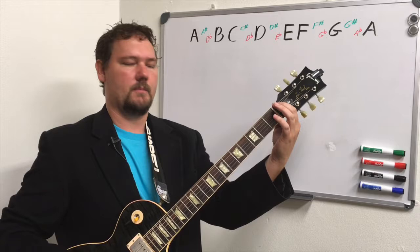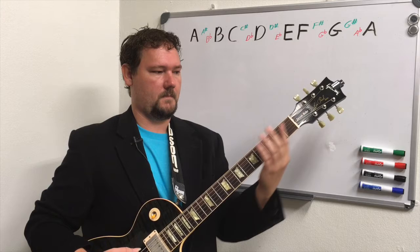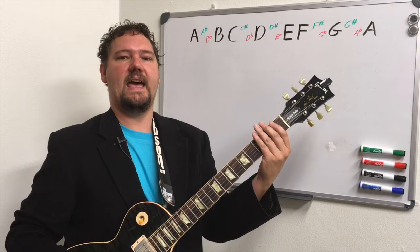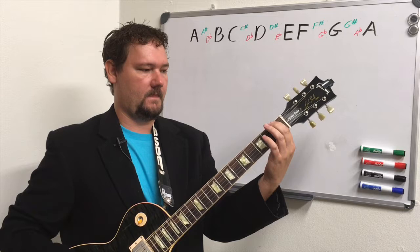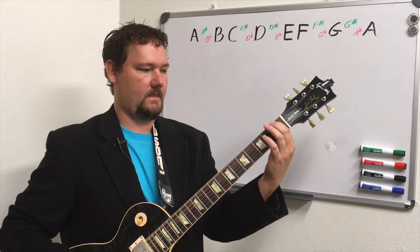We can do the same thing on the sixth string, which starts at E. Playing the sixth string open is E, then going up one fret — a half step — gives F, then F sharp or G flat, G, G sharp or A flat, and A.